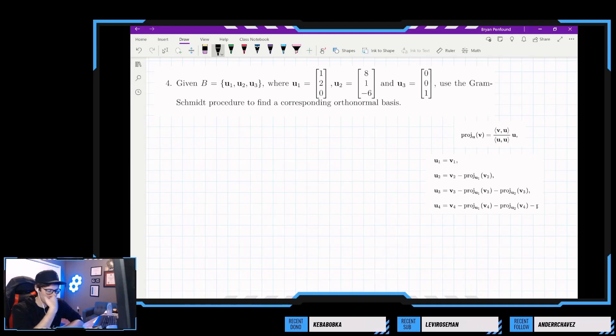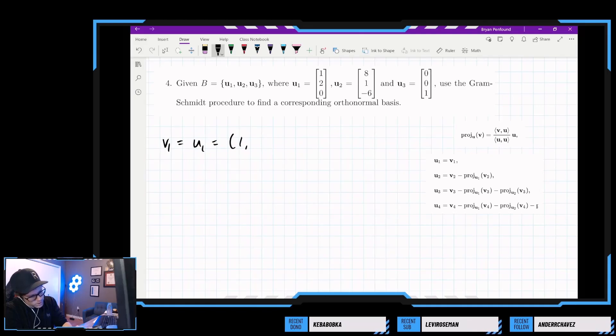Let's go through the procedure the way that the students are probably going to solve this. So they're probably going to say, well let's let v1 be equal to u1, which is 1, 2, and 0.